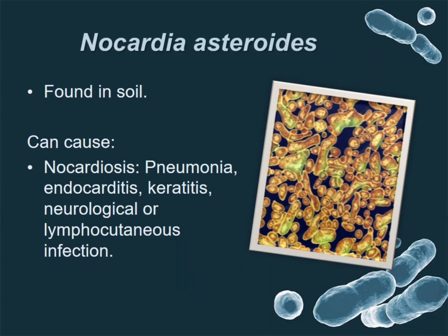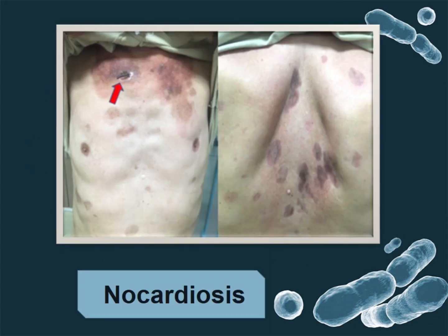And the last one here is Nocardia asteroides. These bacteria are found mainly in soil. Nocardia asteroides causes nocardiosis, which includes pneumonia, endocarditis, and lymphocutaneous infection. Lymphocutaneous infection is a condition where the affected part of the skin hardens, causing wound and pain.